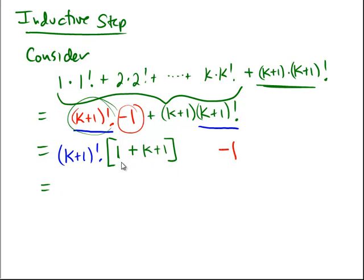Notice that this 1 plus k plus 1 is the same as just saying k plus 2 multiplied against k plus 1 factorial minus 1. And if you take k plus 1 factorial and just multiply by k plus 2, then you get k plus 2 factorial minus 1.